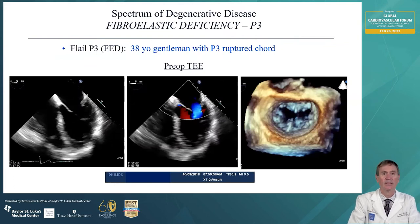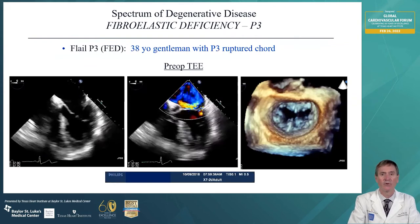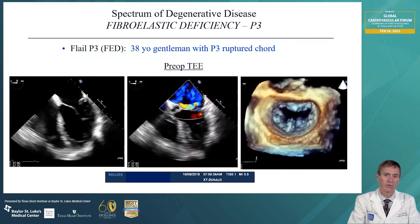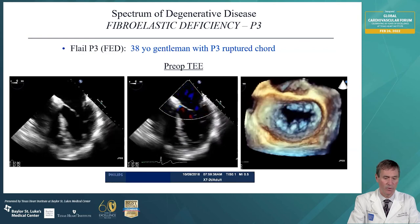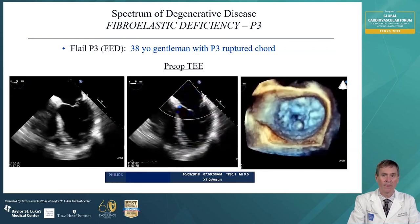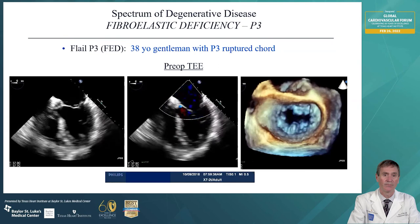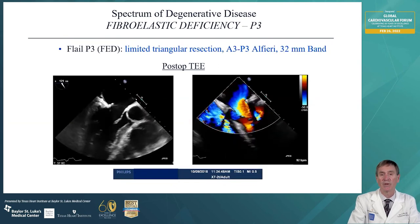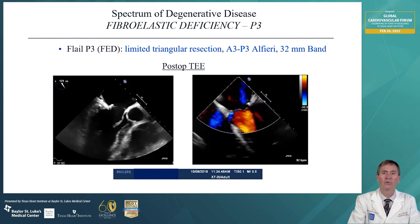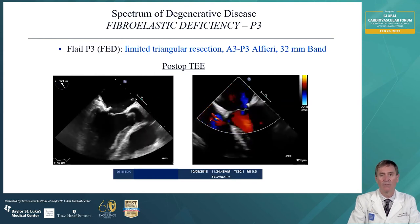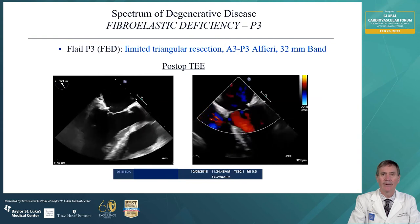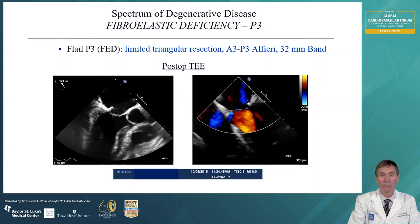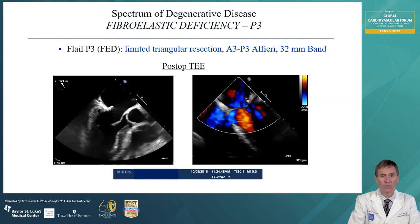Here's a flail P3 — a similar 38-year-old gentleman. He had an anteriorly directed jet, and the 3D image demonstrates that the area of the abnormal leaflet was on the P3-P2 region. We did a limited triangular resection in this patient and also put in a supporting A3-P3 Gore-Tex suture developed by Alfieri, and put in a 32 millimeter band to again support the repair, with no residual regurgitation.